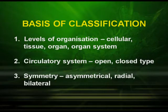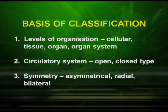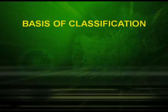Symmetry is another basis of classification. They may be asymmetrical, radial, or bilateral. Asymmetrical organisms cannot be divided into two equal halves. In case of radial symmetry, the organism can be divided into two equal halves if the plane passes through the central axis. In case of bilateral symmetry, which is found in Annelida and Arthropoda, the organism can be divided into two equal halves in any one plane.